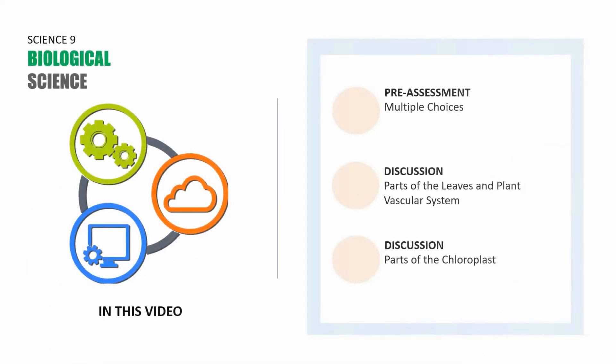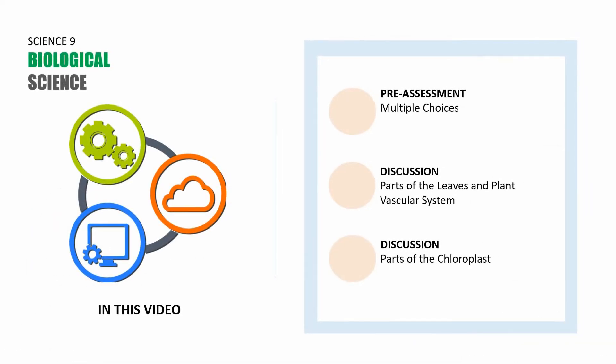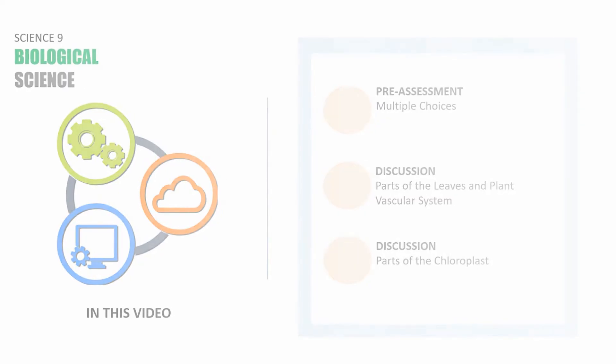As usual, this is divided into three parts. The first part for this video is going to be a pre-assessment with multiple choices. The second part is a discussion about the parts of the leaves and the plant vascular system. And then the last part is a discussion about the parts of the chloroplast. So let's move to the first part: pre-assessment.